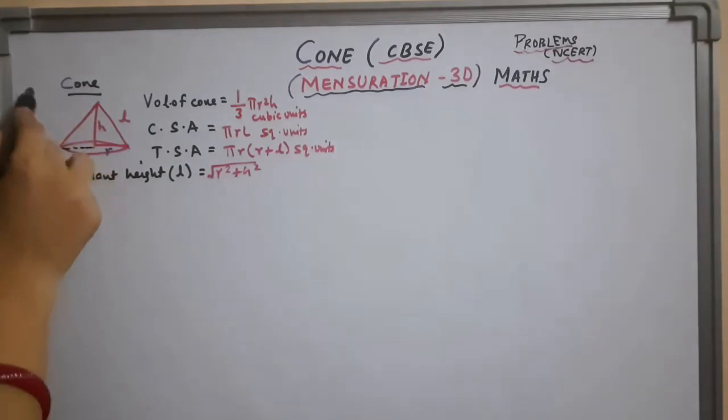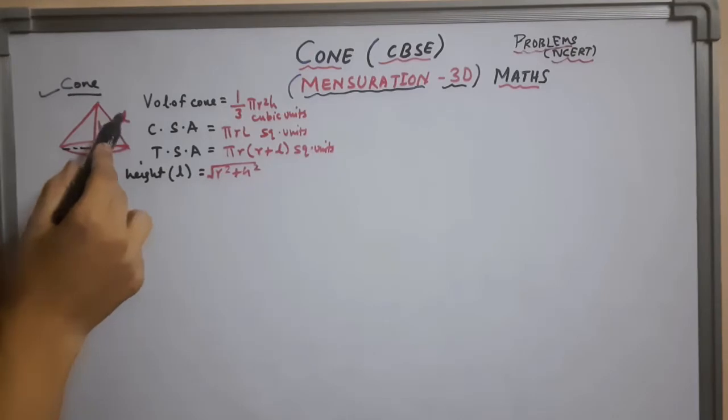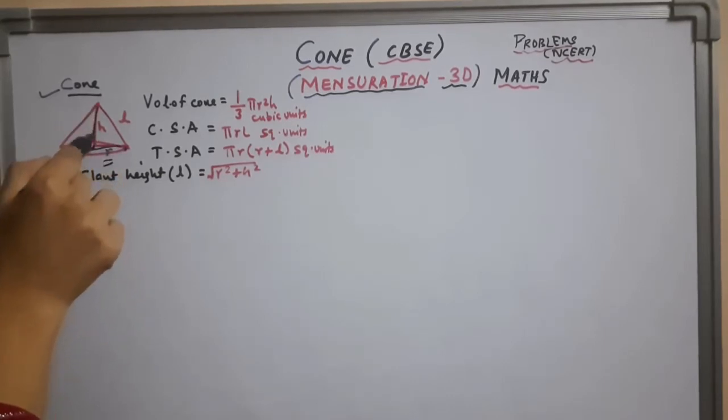Now here I am going to discuss cone. So what is a cone? Take a short review of this. This is the figure of the cone and this full is diameter and half of it this is radius r, and this is our vertical height h, and this is slant height l.